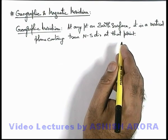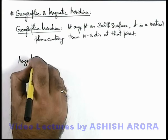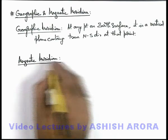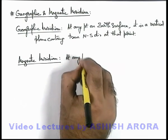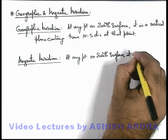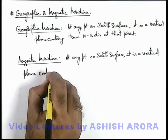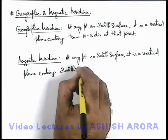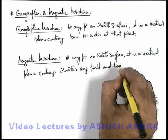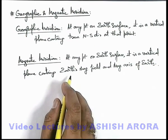We will discuss it with a realistic situation also, but first let's write down the magnetic meridian because it will be easier to deal with both simultaneously. About magnetic meridian we can say that at any point on Earth's surface, it is a vertical plane containing Earth's magnetic field and the magnetic axis of Earth.